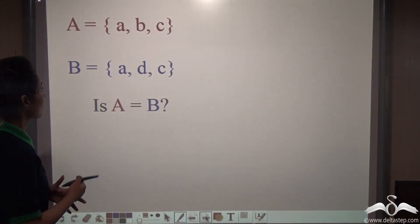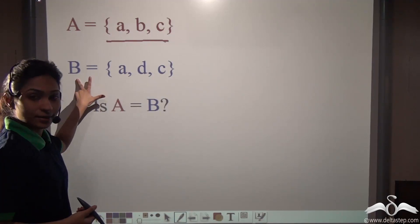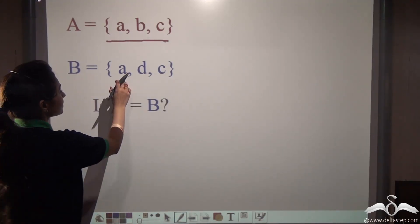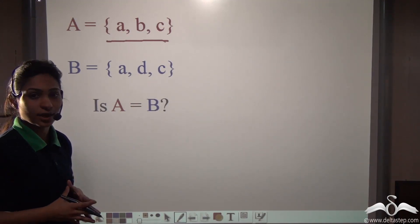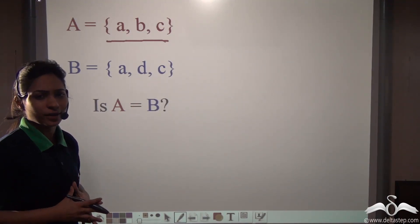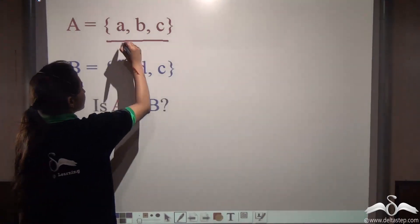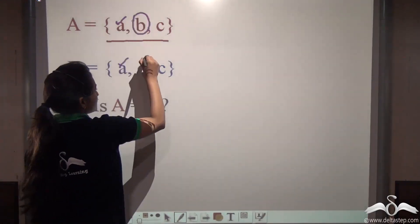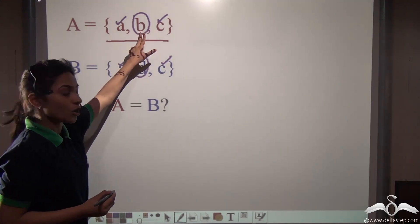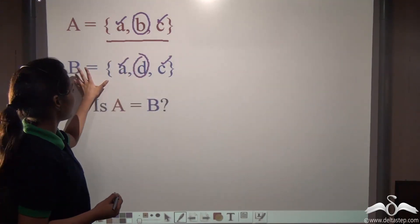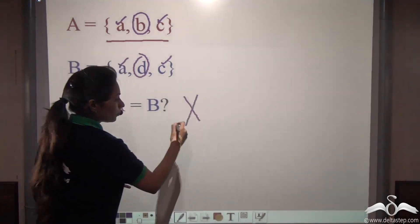Let's take another example. Set A is {A, B, C} — the first three letters of the English alphabet — whereas set B is {A, D, C}. Can you tell me whether A is equal to B? Sets are equal if they have the same elements irrespective of order. But here, each element is not the same: A is the same, B is not the same, C is the same. Set A has the letter B which is not in set B, and set B has the letter D which is not in set A. So set A is not equal to B.